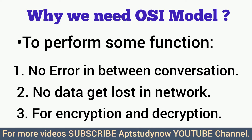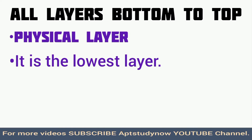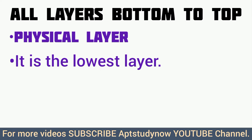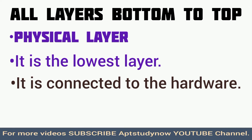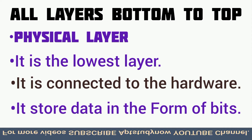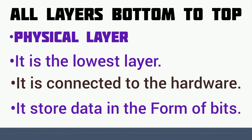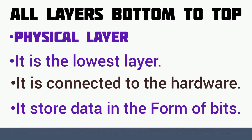The OSI model has a seven-layer architecture. Discussing from bottom to top, the first layer is the physical layer. It is the lowest layer of the OSI model and is connected to the hardware. Data is stored in the form of bits at this layer. It defines hardware, cabling, wiring, and power output. Because it is connected to hardware through wiring, it is called the basic layer of the OSI model.